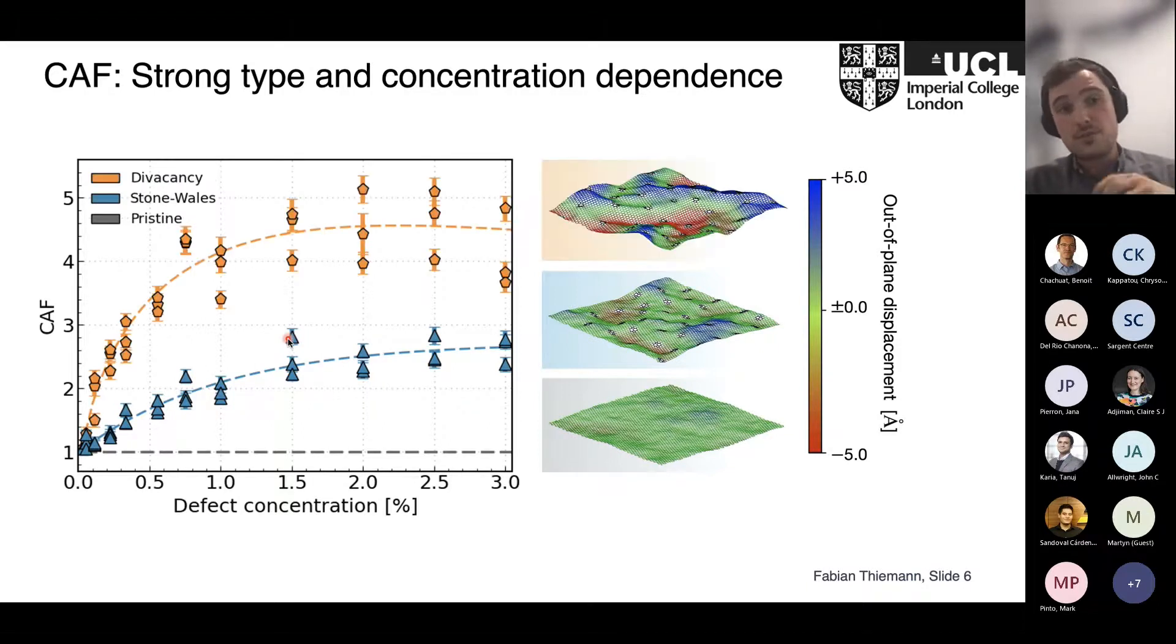What's interesting is when we introduce divacancies instead of Stone-Wales defects, we find that this morphological transformation can become even more significant, where you can reach an enhancement of the corrugation of up to 500% for high concentrations. This is shown here—it's really completely different from the pristine case. What's also interesting is you don't really need a lot of defects to reach a high corrugation. Even if you stay at concentrations of like 0.2%, you can already push the morphology to a limit. We thought this is interesting, but we really want to understand better where this difference is coming from between the defects and how the concentration dependence is playing a role.